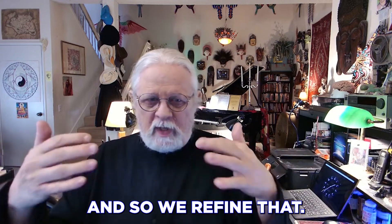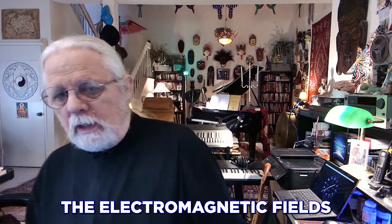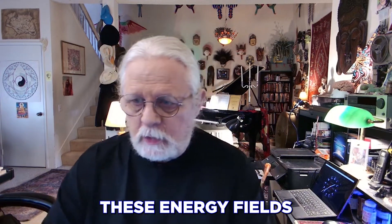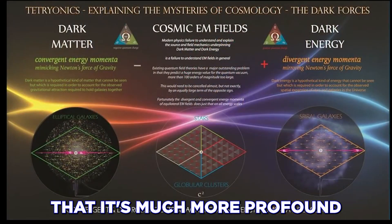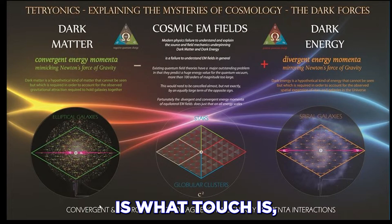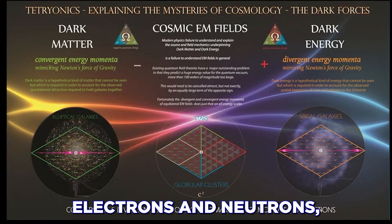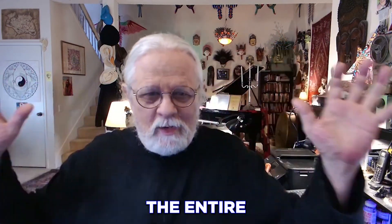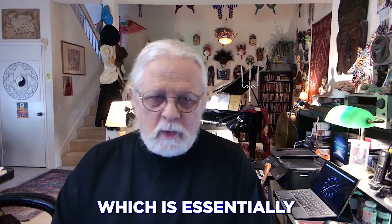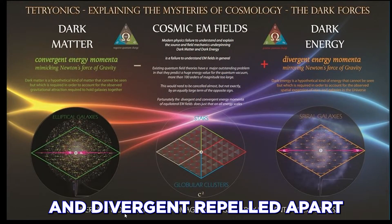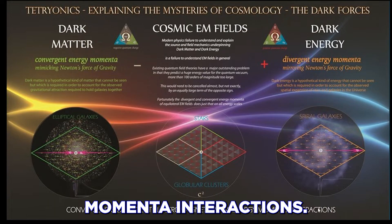We refine our sense of touch, and all of a sudden we can feel the electromagnetic fields coming off the body — that's the sensitivity of being able to feel energy fields. We also know it's much more profound and mysterious than that. Convergent and divergent electromagnetic mass-energy-momenta interactions is what touch is. As soon as we have atoms with protons, electrons, and neutrons, we have the quantum field, dark matter, dark energy, and cosmic electromagnetic fields in action underlying the simplest act of touching.